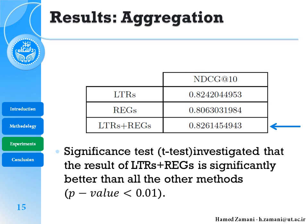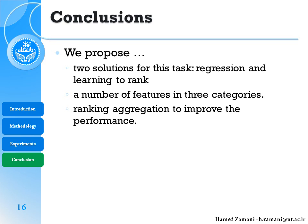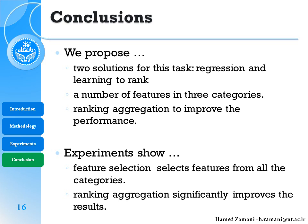As a conclusion, we proposed two solutions for this task — regression and learning to rank — with 27 features in different categories, and a ranking aggregation to improve performance. The experiments show that feature selection selects features from all categories, so all of them are useful, and the ranking aggregation significantly improves the results.